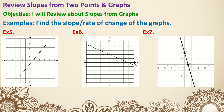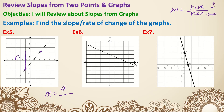Now let's review how to identify slopes from graphs. You need two points, and the slope is rise over run — go vertical first, either up or down, then divide by how much you're going horizontally. Pay attention to whether it's positive or negative. For example 5, we start from the point on the left and rise upward to get to the other point: up 1, 2, 3, 4 — that's a positive 4 rise. Then run horizontally 1, 2, 3 to the right — positive 3. Both positive, so the slope is 4 over 3.